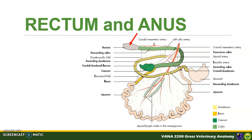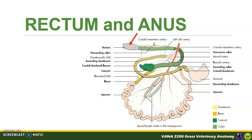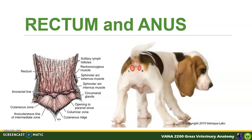The rectum is the distal portion of the large intestine, beginning at the pelvic inlet and ending at the anal canal. It is held close to the body wall by connective tissue and muscles. The anal canal is the short terminal part of the large intestine, consisting of the internal anal sphincter (smooth muscle) and an external anal sphincter composed of striated muscle. Anal sacs are paired pouches located between the internal and external anal sphincters, opening into the anal canal at positions comparable to the 4 and 8 o'clock positions. The anus is the external opening of the intestine.